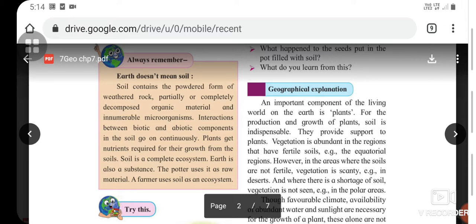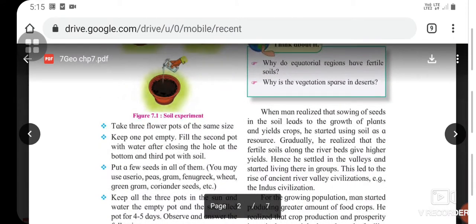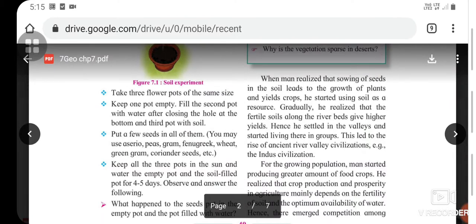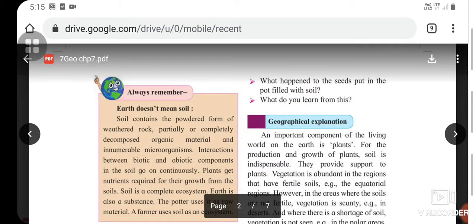There is an activity which is the soil experiment. Take three flower pots of the same size. Keep one pot empty, fill the second pot with water after closing the hole at the bottom, and the third pot with soil. Put a few seeds in all of them. You may use any seed - wheat, green gram, coriander. Keep all three pots in the sun and water the empty pot and soil-filled pot for four or five days. Observe and answer the following questions: What happened to the seeds in the empty pot and pot filled with water? What happened to the seeds in the pot filled with soil? What do we learn from this?